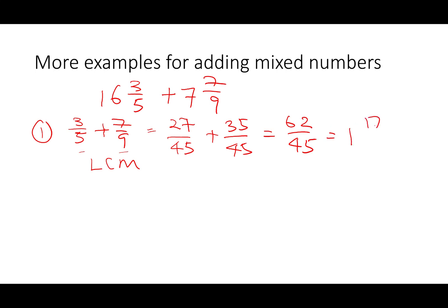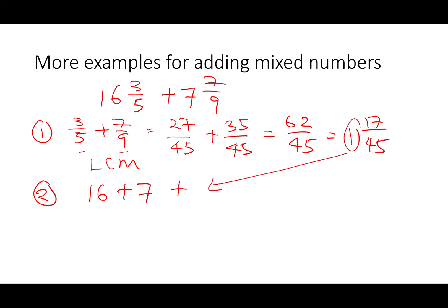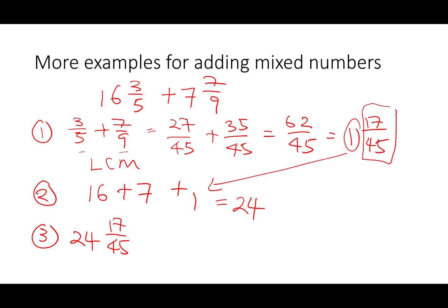Converting sixty-two over forty-five back to a mixed number gives us one and seventeen over forty-five. The second part is to add the whole numbers: sixteen plus seven plus the one from the addition of the fractions gives us twenty-four. So the total answer is twenty-four and seventeen over forty-five. This fraction cannot be reduced further because seventeen is a prime number, divisible only by one and seventeen itself.